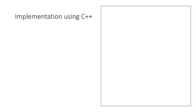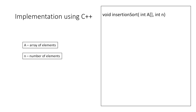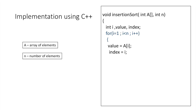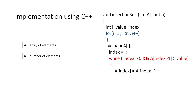Now let's implement this in C++. The insertion sort function takes an array A and integer n as arguments. We declare variables i, value, and index. We traverse the array starting from index 1, since the first element is already sorted. In each iteration we store the selected element in value and set index to i. The while loop runs while index > 0 and element at index-1 > value, shifting elements right and decrementing index. When the loop ends, we insert the selected element at its correct position.